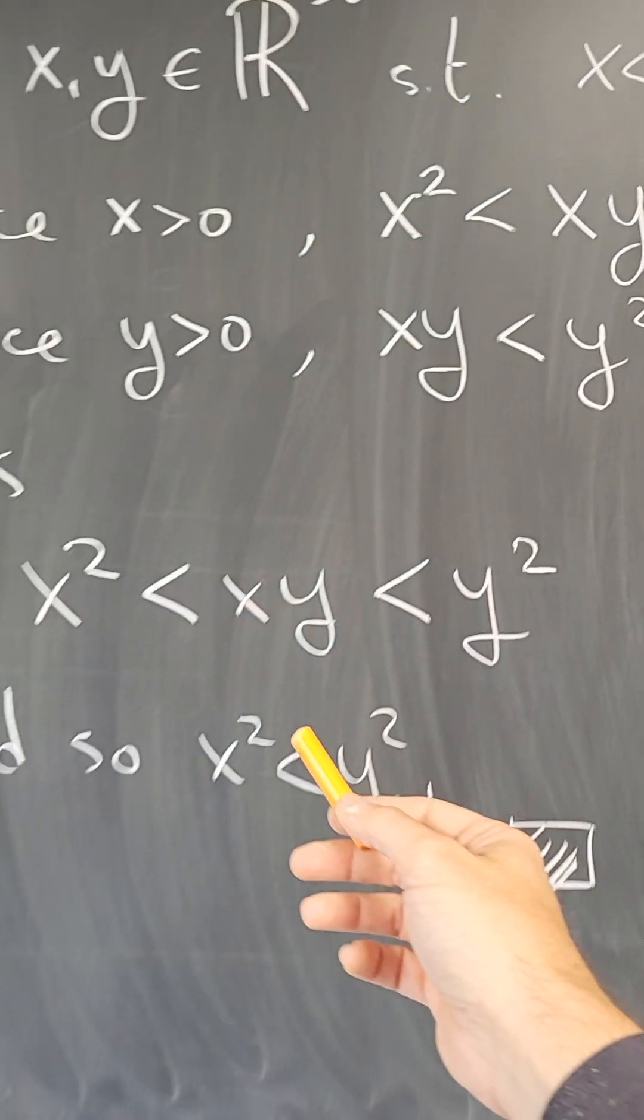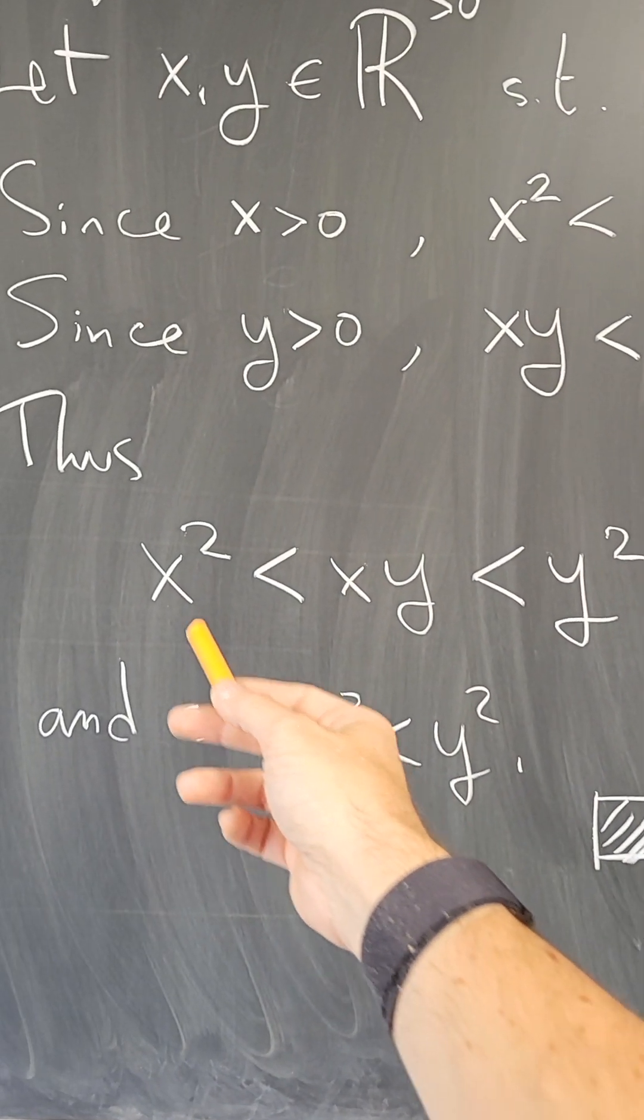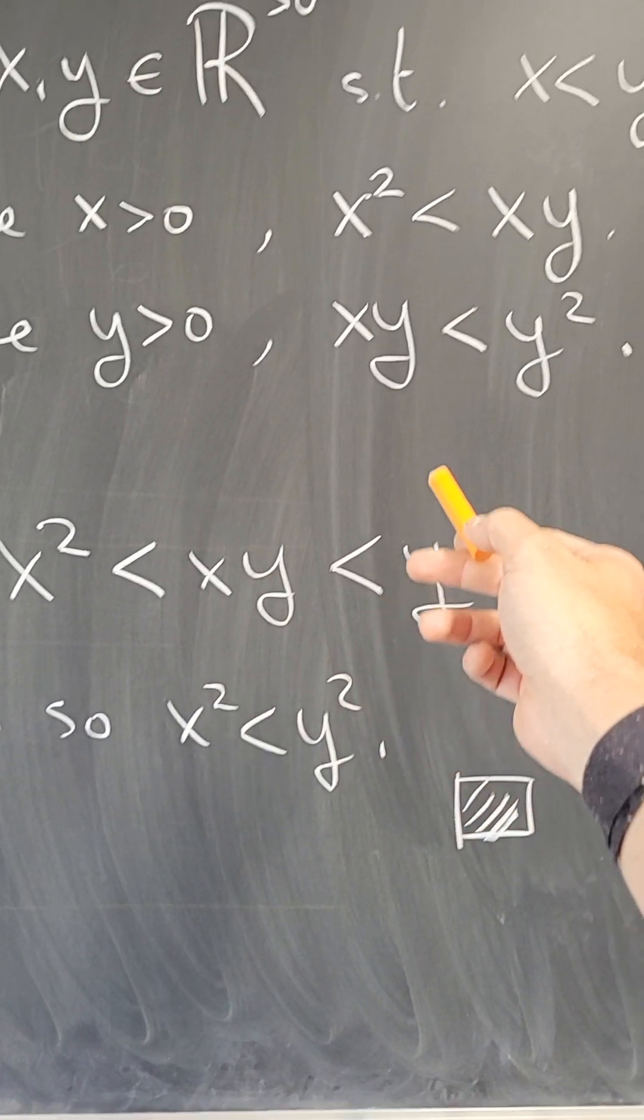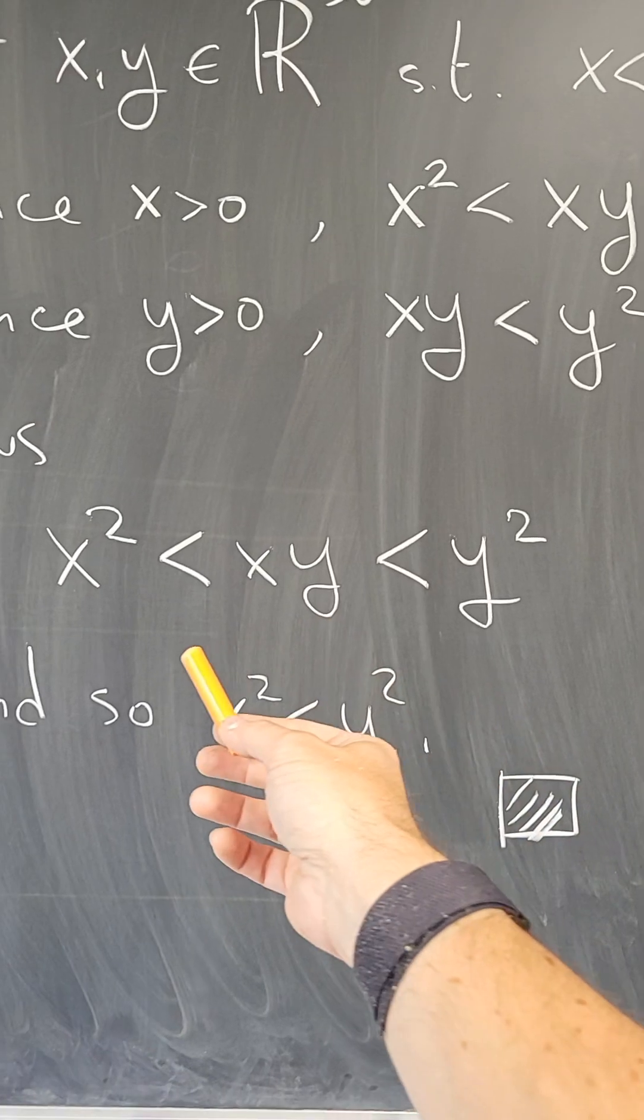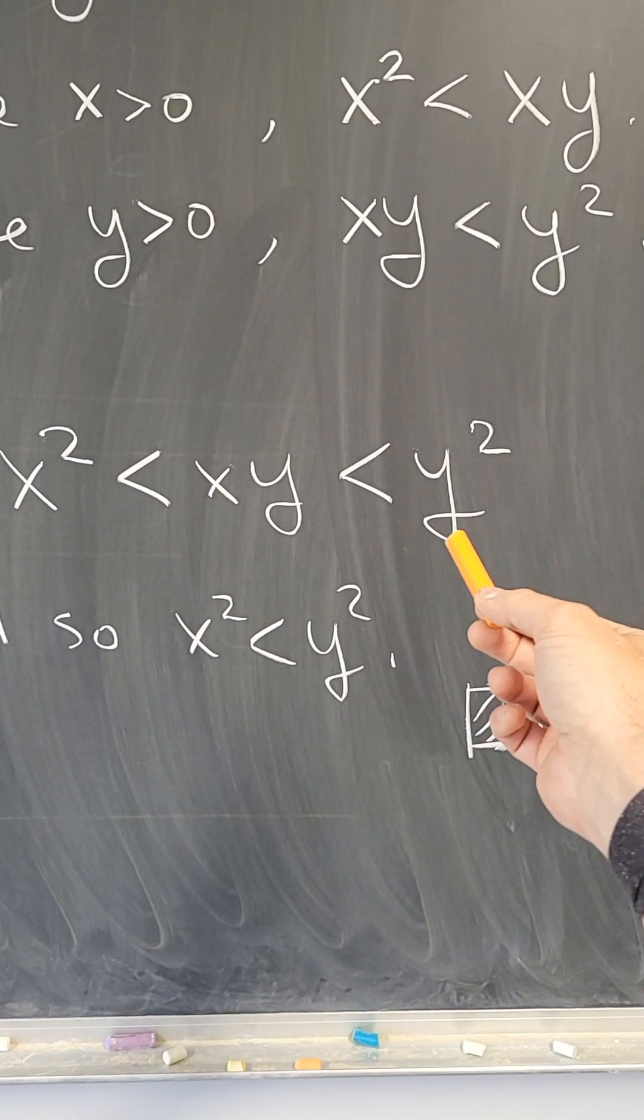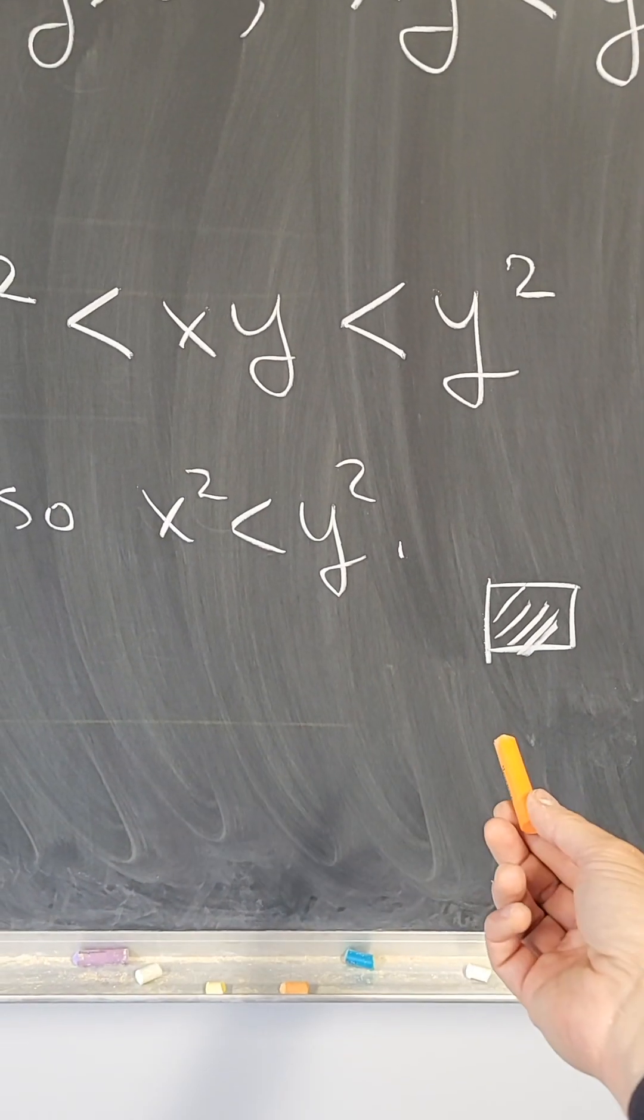And now if I put them together, what I get is that x² is less than xy because of this, and xy is less than y² because of this. And now by the transitivity of inequalities, I get that x² is less than y², which is what I wanted to prove.